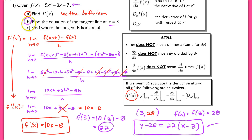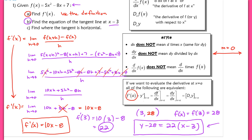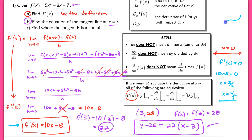For part c, we find where the tangent line is horizontal. A horizontal tangent has slope 0, so we set f prime of x equal to 0. Setting 10x − 8 = 0 and solving gives x = 4/5. This tells us that at x = 4/5, the function has a horizontal tangent. To find the exact coordinate, plug 4/5 into f(x), which gives 19/5. So the tangent is horizontal at the point (4/5, 19/5).